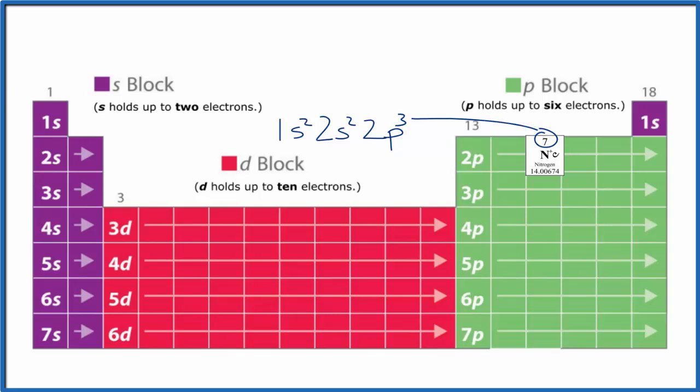So 2p³, and we're at nitrogen. We've used 2 plus 2 is 4, plus 3, that's those seven electrons we had to write the configuration. So we can use this information now to write the atomic orbital diagram for nitrogen.